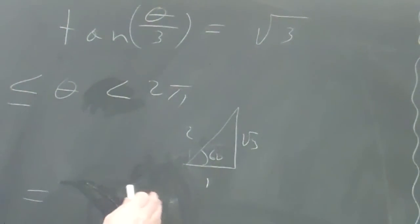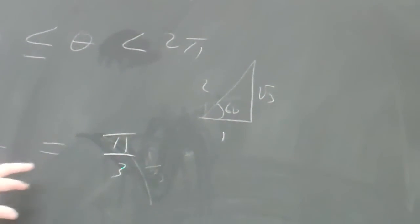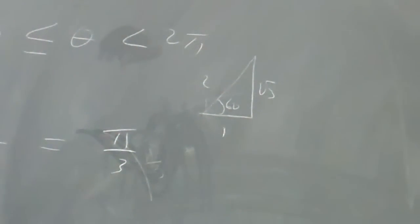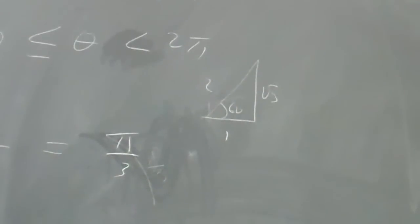So, obviously, 60 degrees, which is pi over 3, that certainly would work. If theta over 3 were pi over 3, then tangent of pi over 3 would work. And then you might say, it's positive.